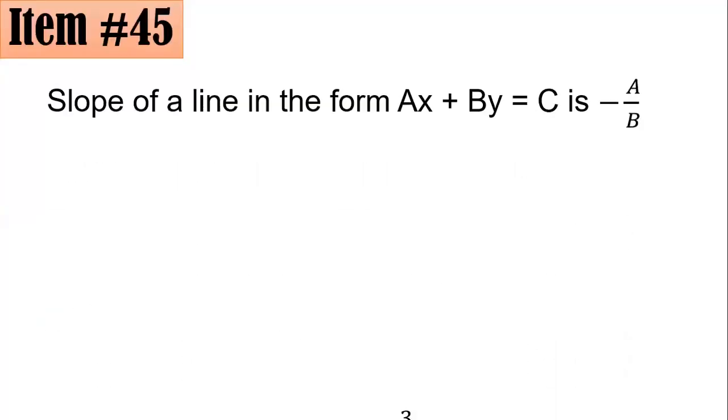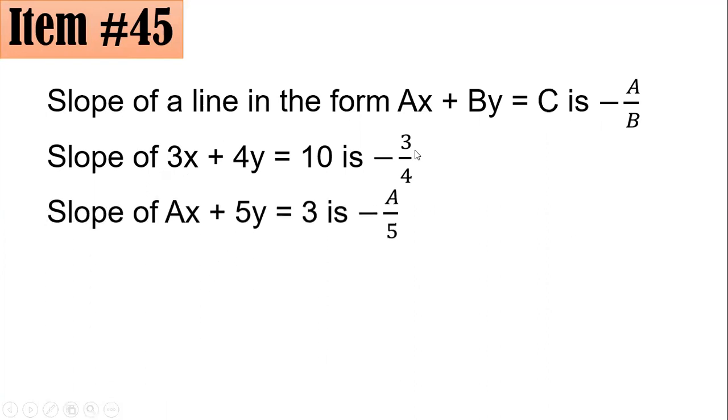So the slope of 3x + 4y = 10 is -3/4. The slope of ax + 5y = 3 is -a/5. And since these two have to be parallel, they have to be equal with one another.